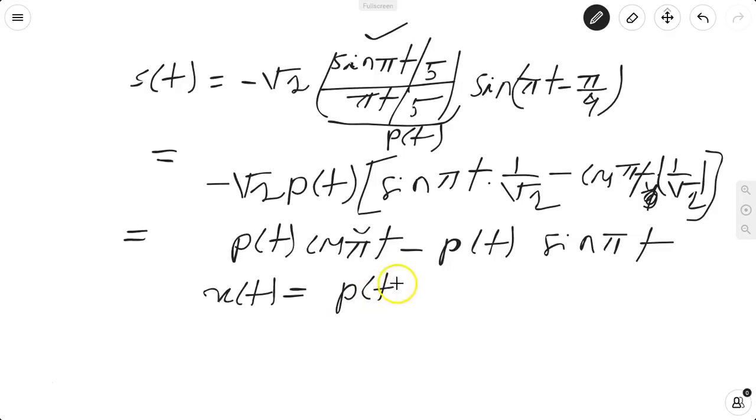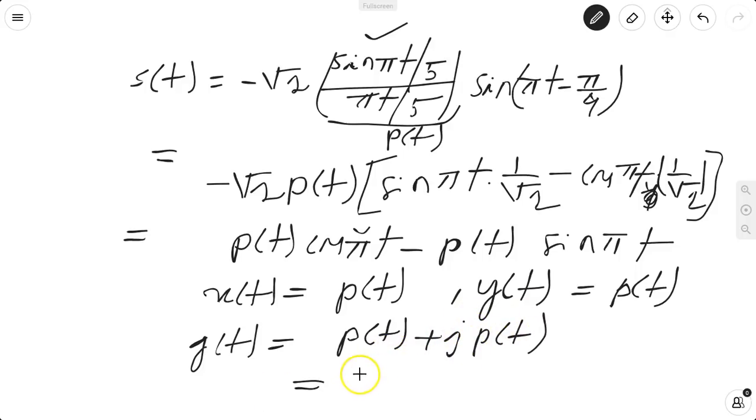Now you compare it. x(t) is p(t), y(t) is p(t). So you have g(t) as x(t) + jy(t) = p(t)(1 + j).